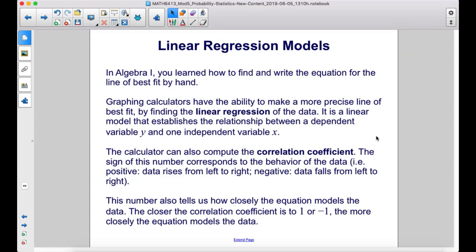This number also tells us how closely the equation models the data. The closer the correlation coefficient is to 1 or -1, the more closely the equation models the data.